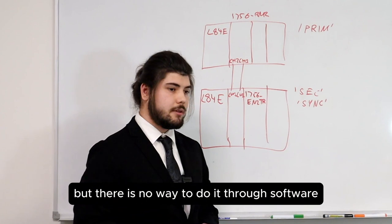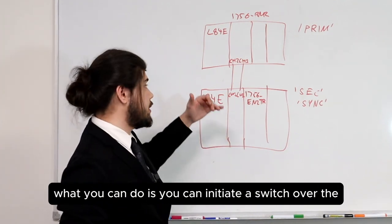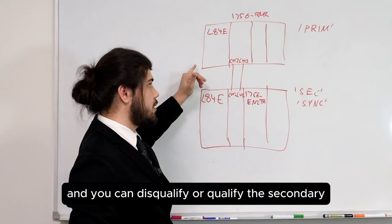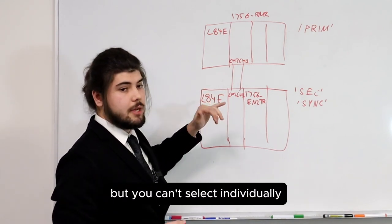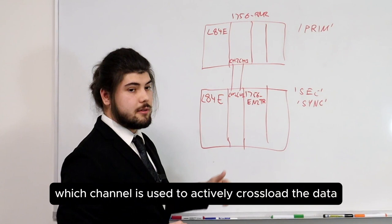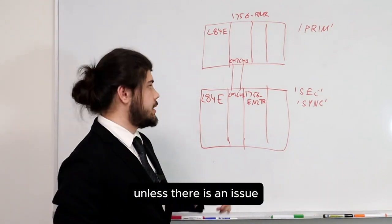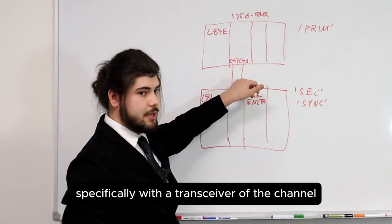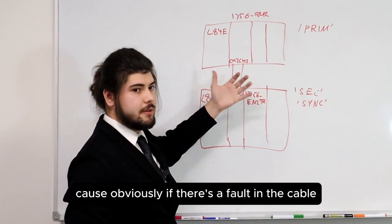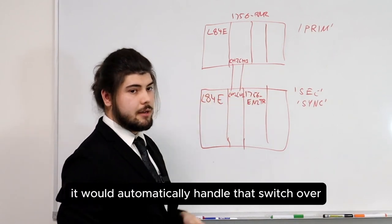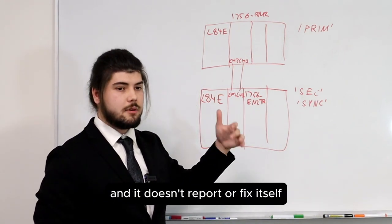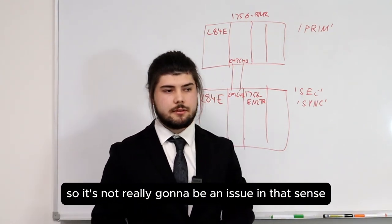There is no way to select the active cross-load channel through software. You can initiate a switchover of the PLCs through the RMCT and disqualify or qualify the secondary, but you can't individually select which channel is used to actively cross-load data. Unless there's an issue specifically with a channel transceiver, that wouldn't be a concern. Obviously if there's a fault in the cable it would automatically handle that switchover, so it would never be in a situation where it's unable to cross-load and doesn't report or fix itself.